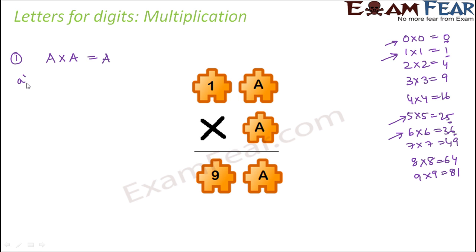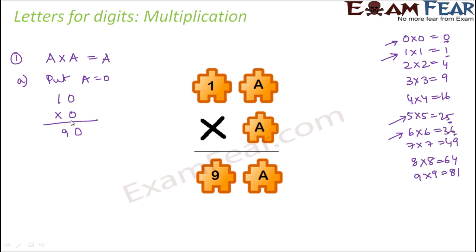The first option could be a=0. But 0 is not an option — if you put a=0, it becomes 10×0 = 90. However, anything multiplied by 0 should give you 0, so a=0 is not valid.